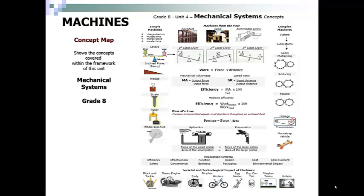Here is a concept map showing all of the materials that will be covered in this unit. We have simple machines, machines from the past, types of levers, the simple machines including wedge, screws, pulleys, wheels and axles, as well as things like efficiency, safety, and environmental impact.